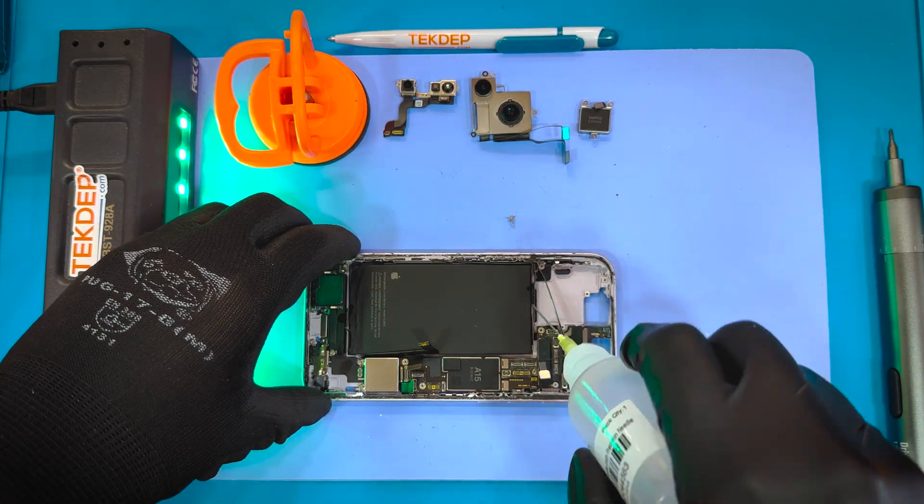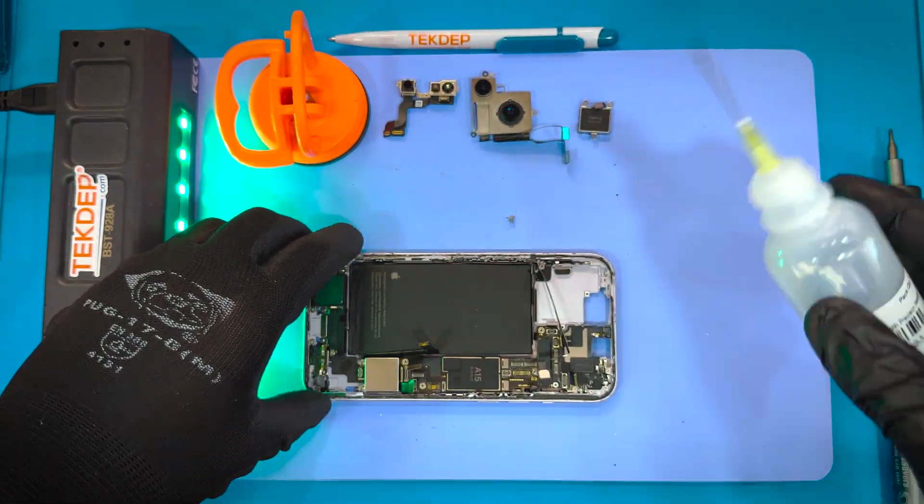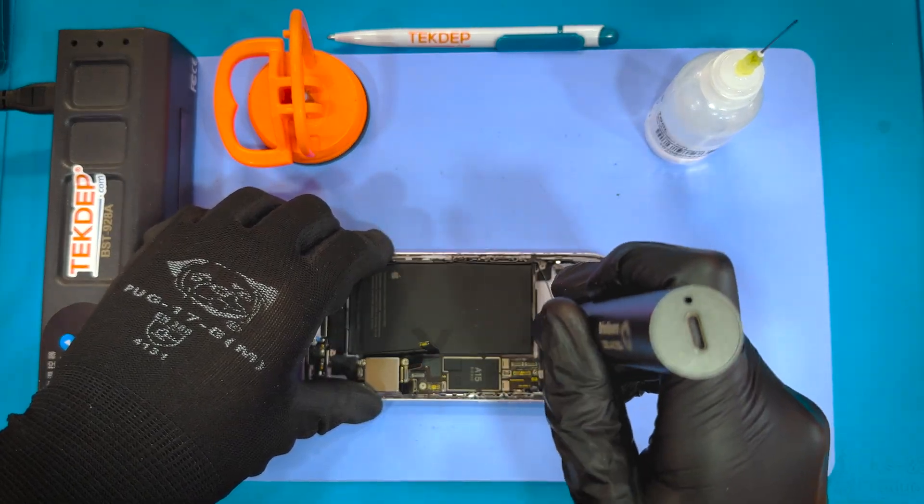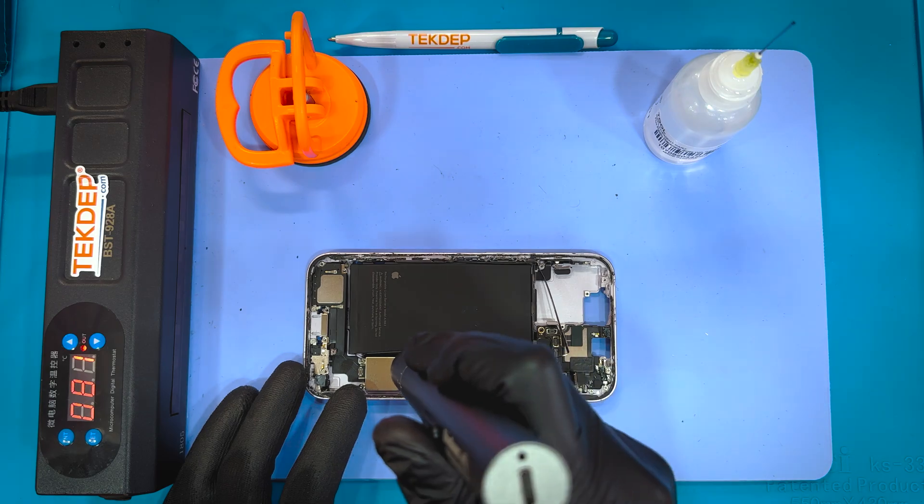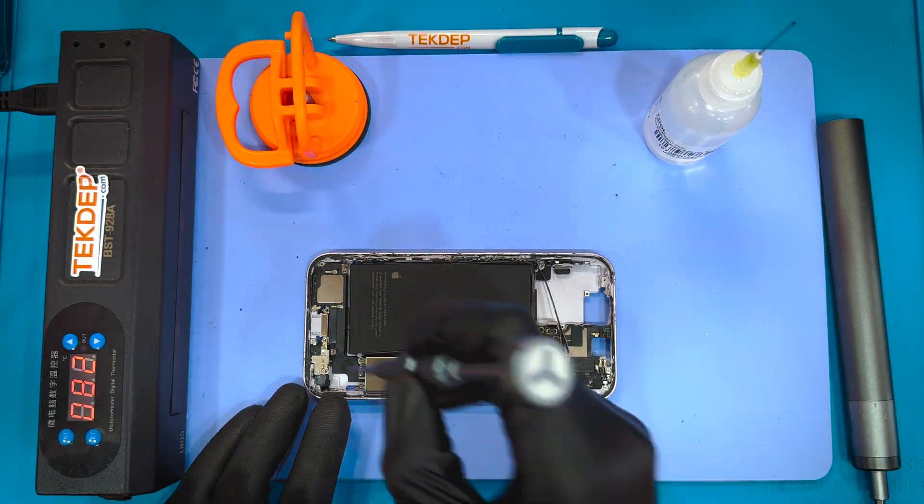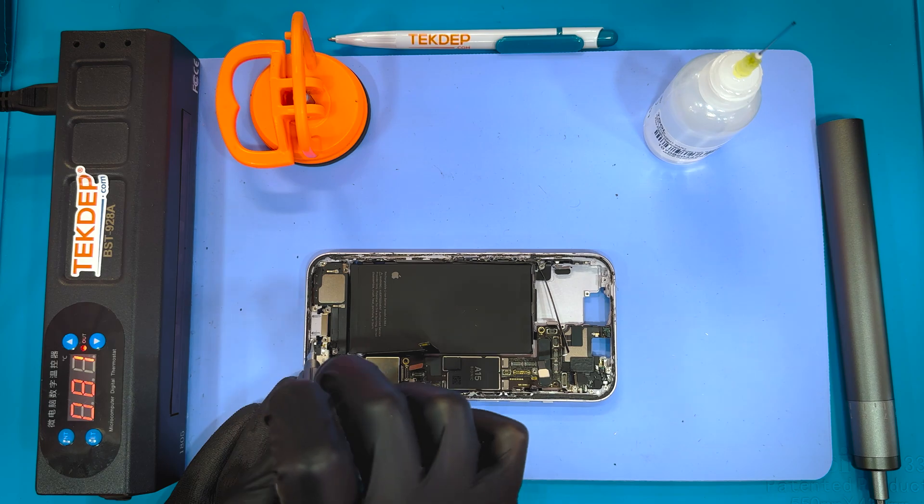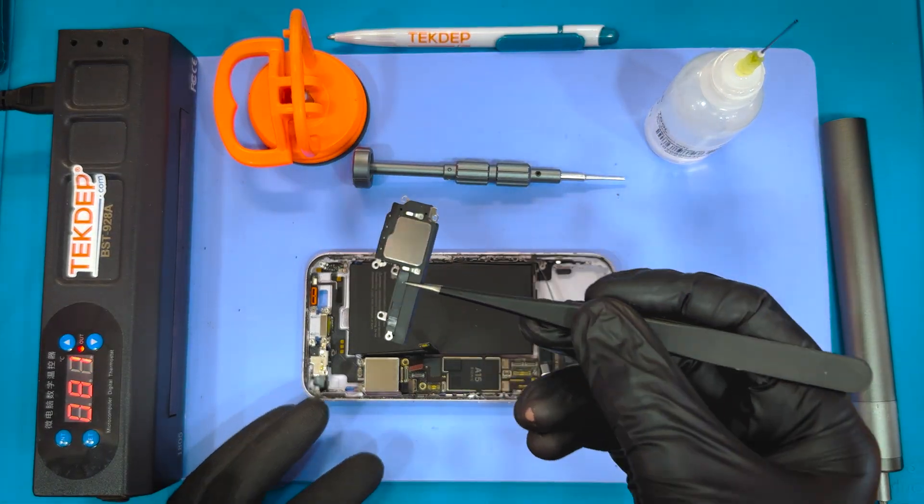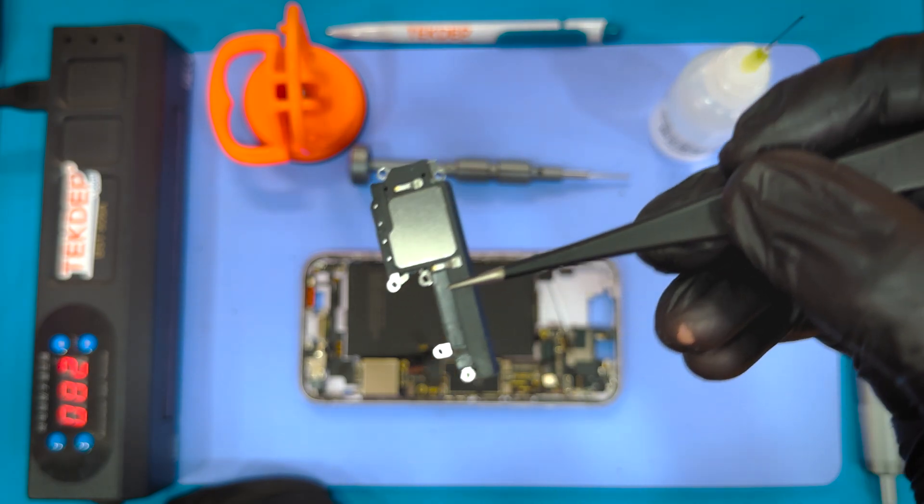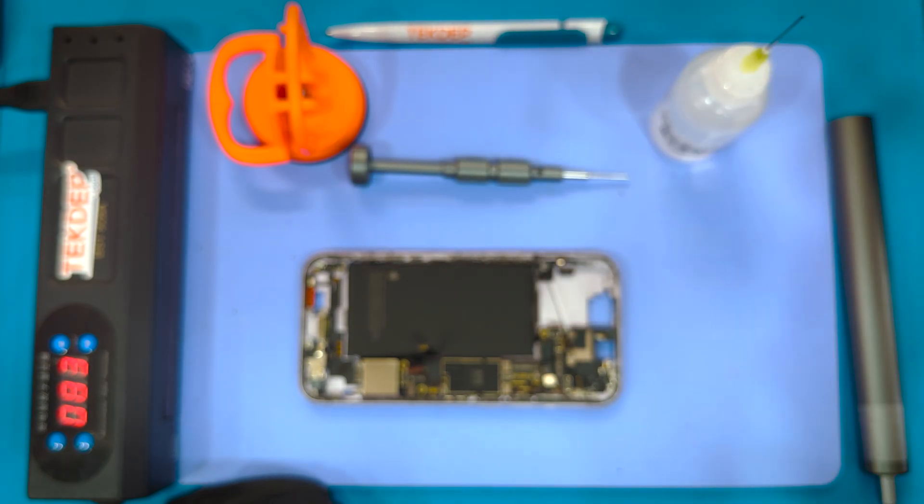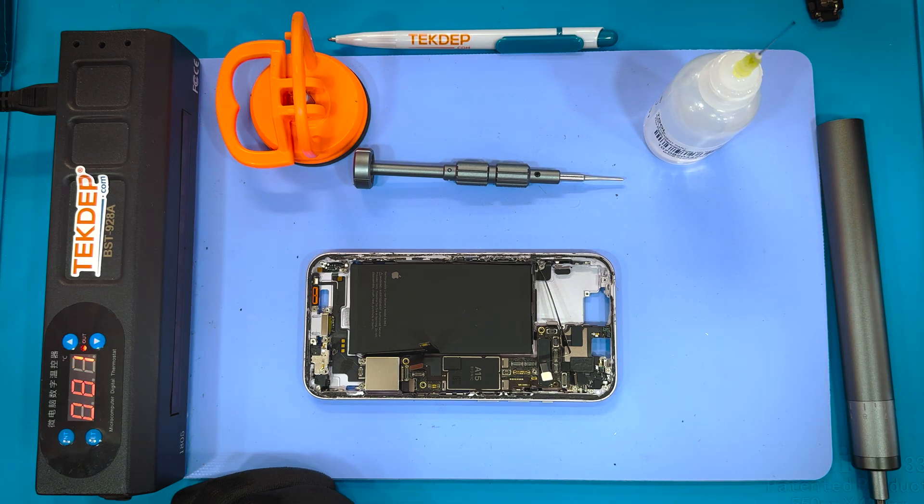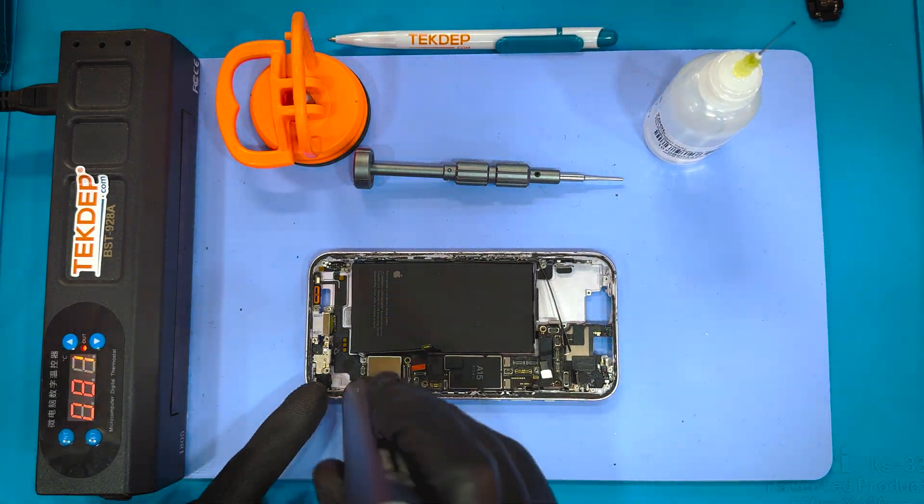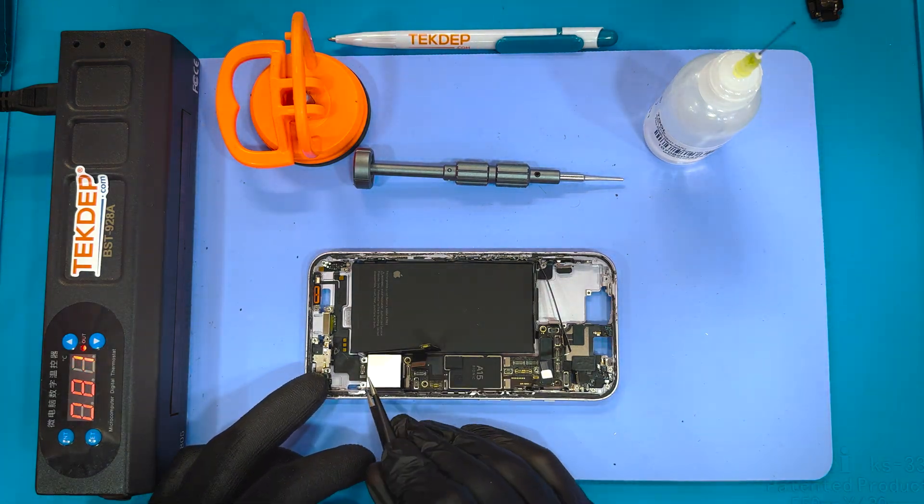The battery has pull tabs that you can use to remove that adhesive that keeps it attached to the frame, but we prefer to just let the isopropyl do its thing in combination with the heating mat. The pull tabs break pretty easily and isopropyl works perfectly fine. Plus in the meantime you can start working to remove other components as you see Sam doing on the screen. That was the loudspeaker. And as we mentioned, this phone does not have a physical sim but it does still have a sim reader.